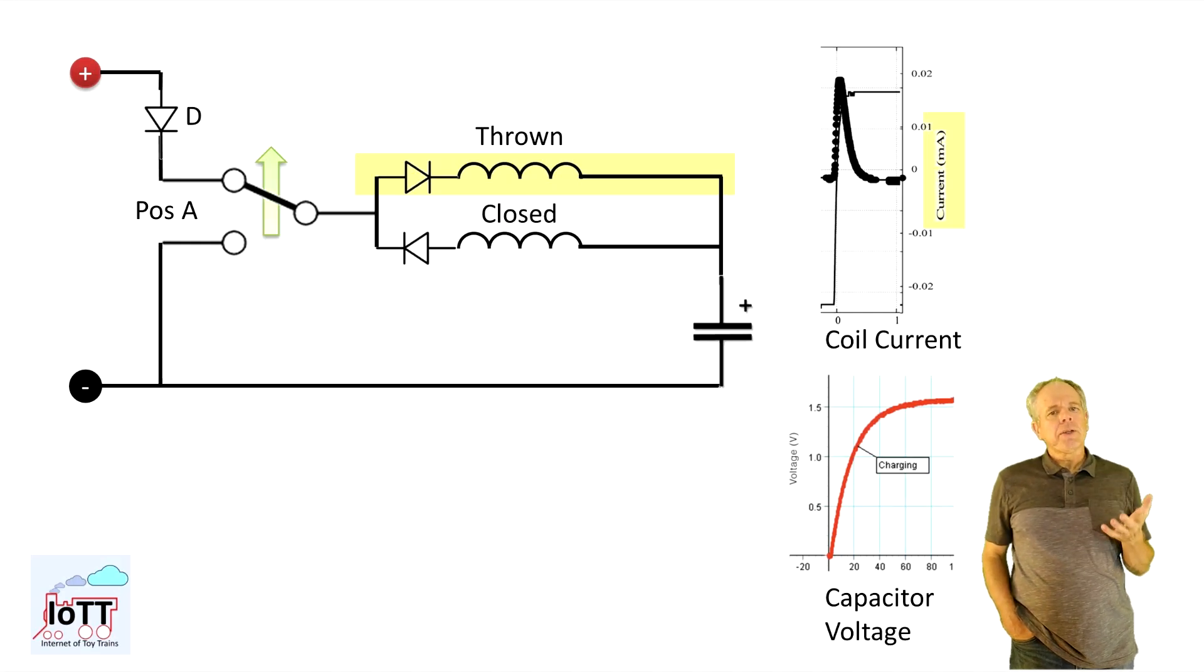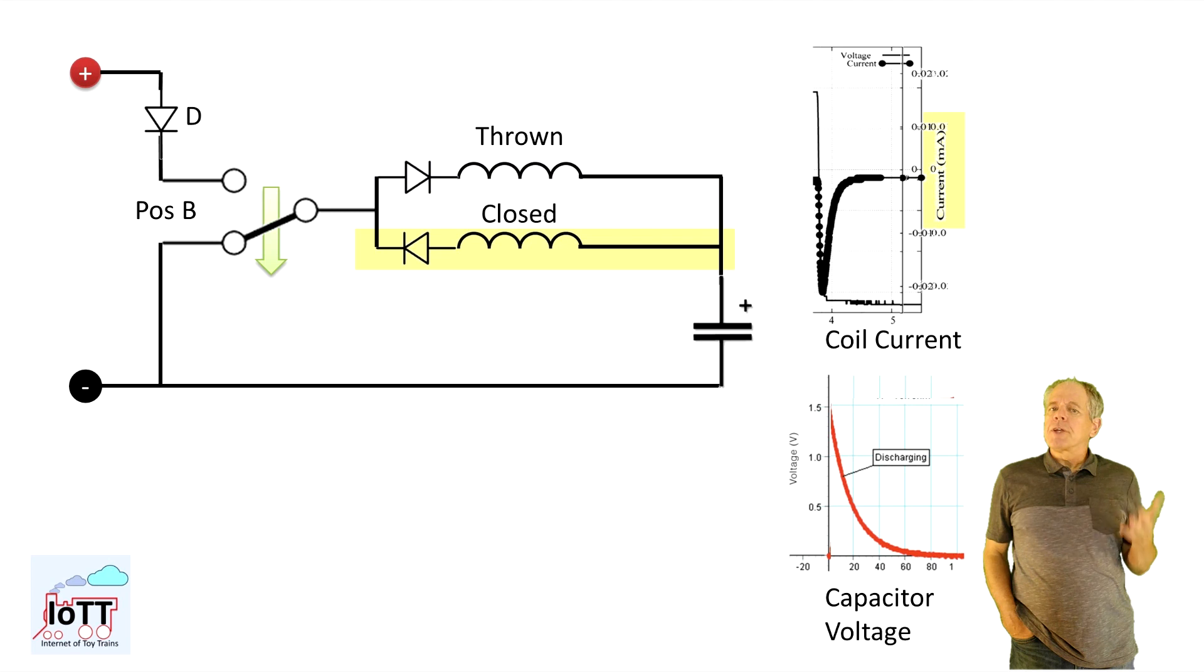If the relay contact is in position A, the capacitors are charged from the power supply and the charging current is driving one coil of the snap switch through the diode in direction of the current flow. Once the capacitor is fully charged, the current stops flowing and both ends of the coil have the positive voltage of the power supply. If the relay changes to position B, one end of the coil is put to ground and the capacitor starts discharging through the coil and diode thereby setting the turnout to the other direction.